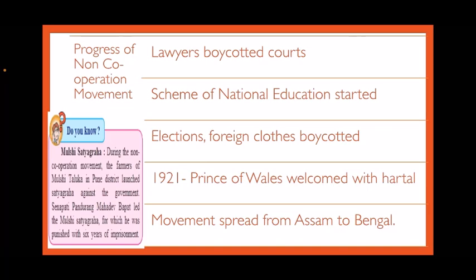During the Non-Cooperation Movement, the farmers of Mulshi Taluka in Pune district launched a Satyagraha against the government. Senapati Pandurang Mahadev Bapat led this Satyagraha and was punished with six years of imprisonment.